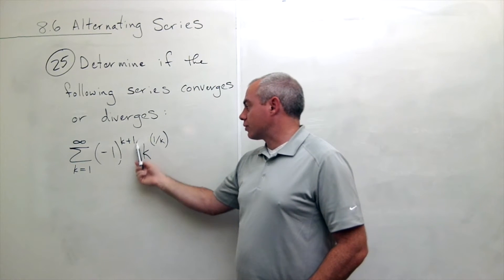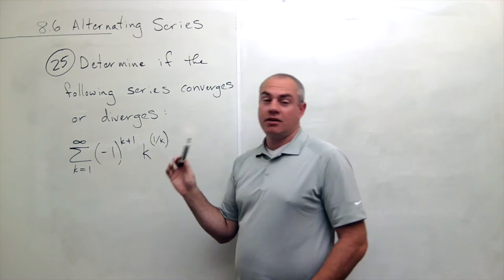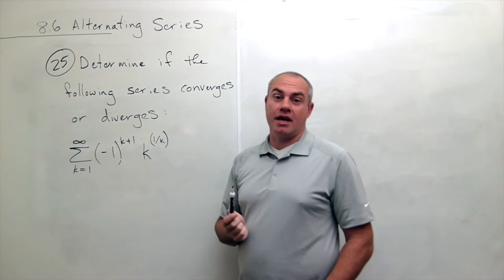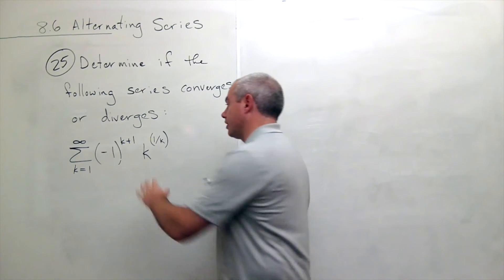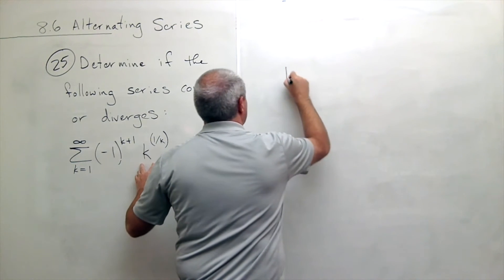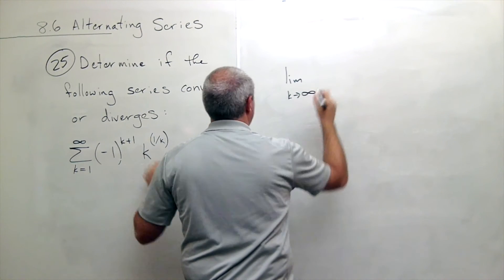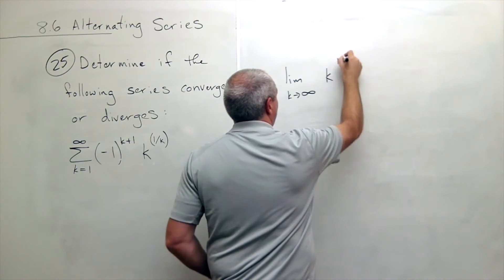So what we're going to do is we're going to take the rest of it, ignoring the negatives, and we're going to take a limit as k goes to infinity. So I'm going to take a limit as k goes to infinity of k to the power of 1 over k.